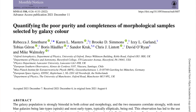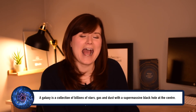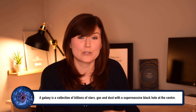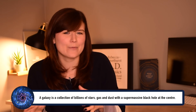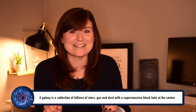Let's start with the title first of all. The title is: "Quantifying the purity and completeness of morphological samples selected by colour." What that means is: if you're trying to make a collection or a sample of galaxies that have a specific shape but you don't actually know their shape, then how many of the wrong-shaped galaxies make it into that sample if you use the colour instead?